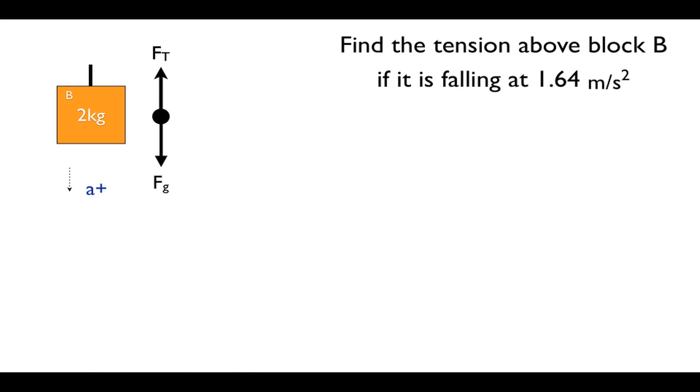Now we apply Newton's second law. Since we chose our system to only include block B, 2 kilograms is the total mass of our system. It's the only one we need to include.